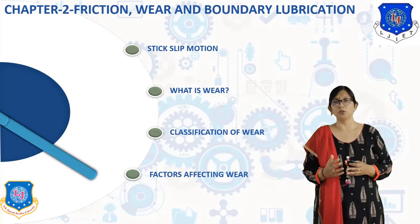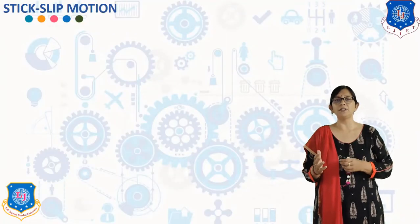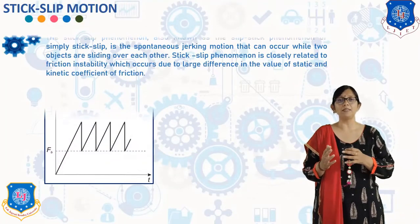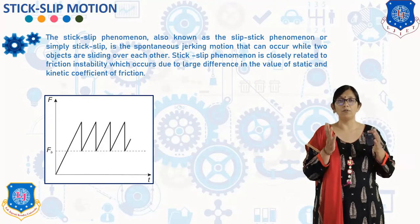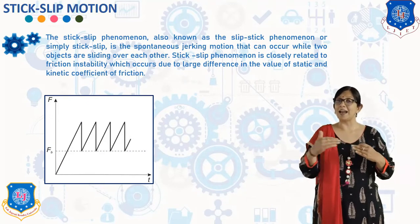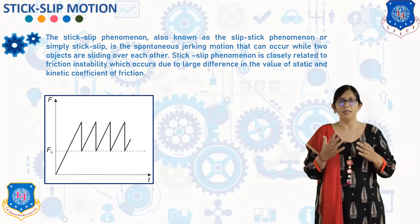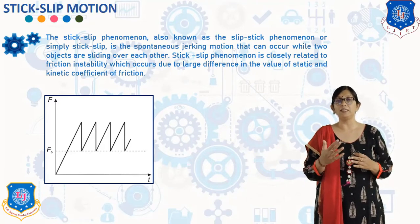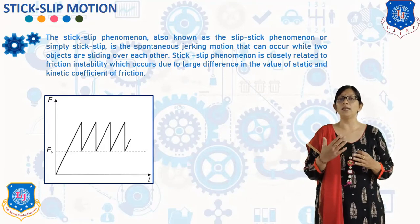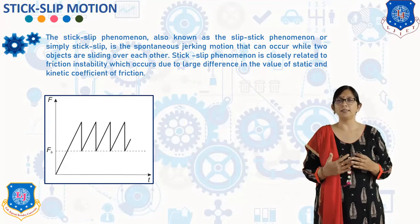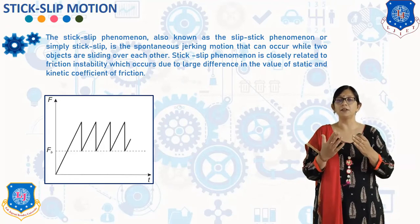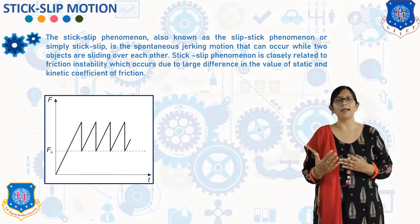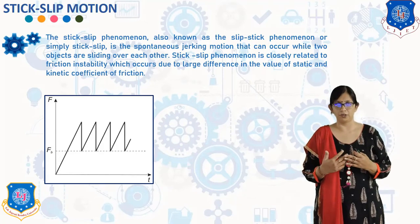Stick-slip motion, also known as the slip-stick phenomenon or simply stick-slip, is the jerking motion that can occur while two objects are sliding over each other. The stick-slip phenomenon is closely related to friction instability, which occurs due to a large difference in the value of static and kinetic coefficient of friction.